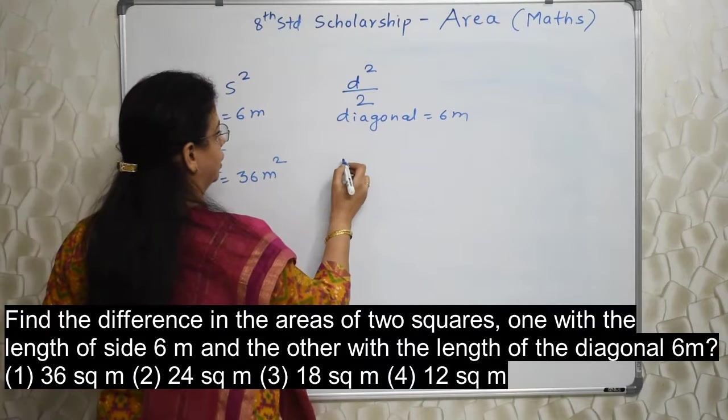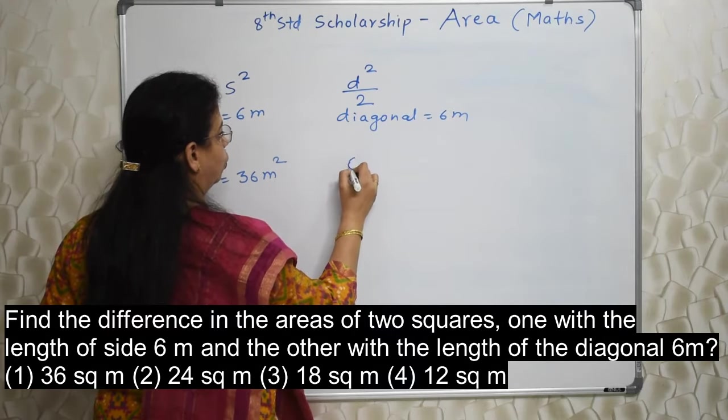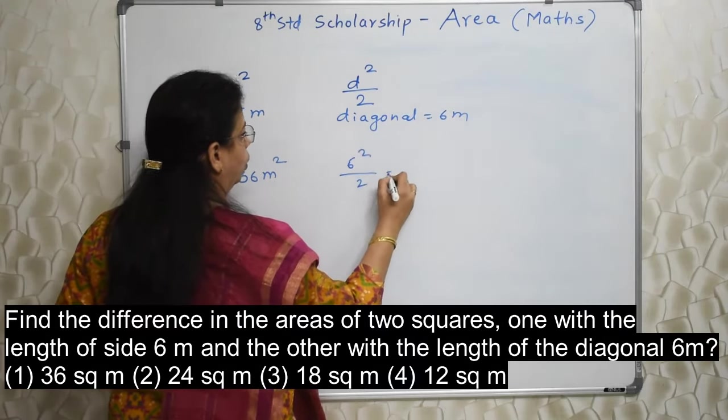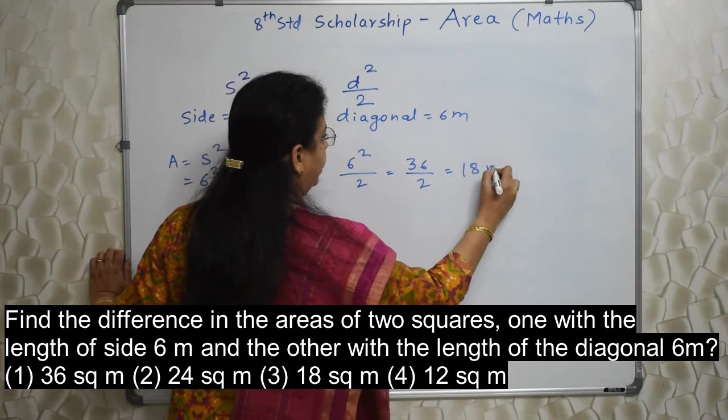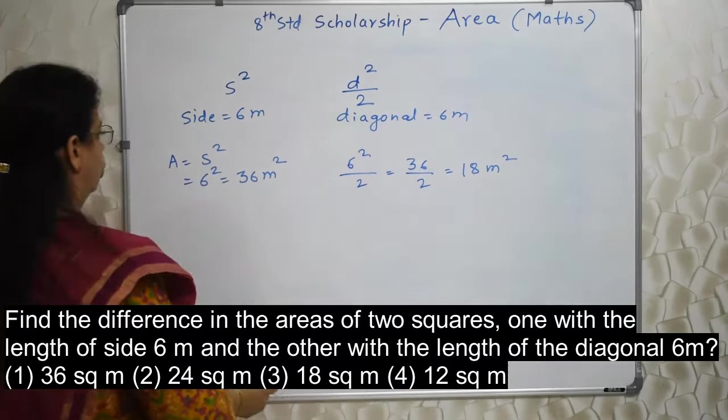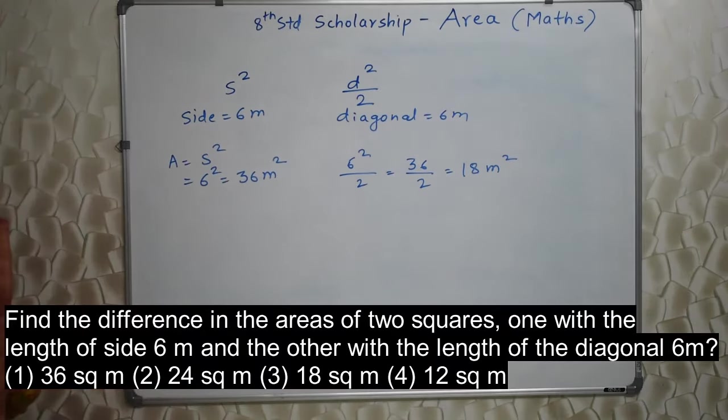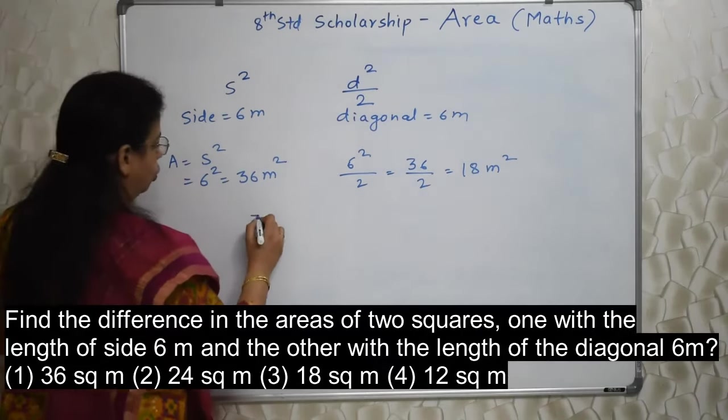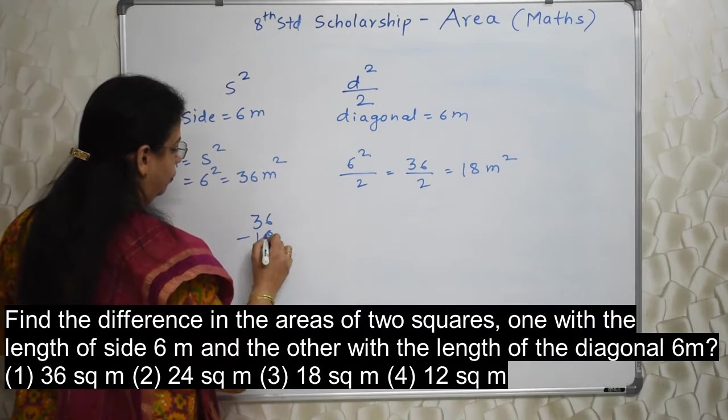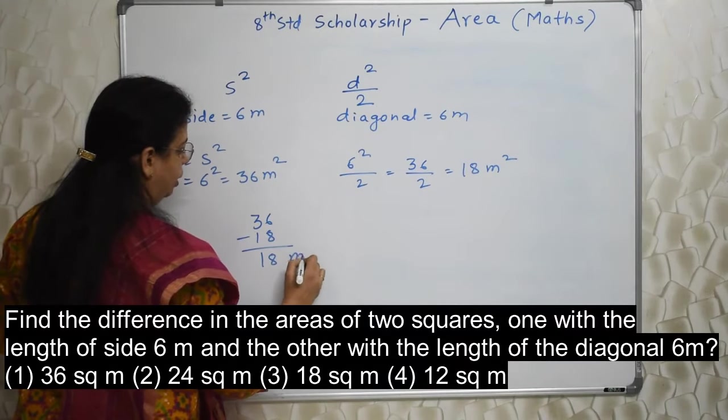Now here, diagonal is 6. So D square, so 6 square upon 2, that is 36 upon 2, that is 18 meter square. So the area is different even though diagonal and sides are same. So we need to find out the difference between the two. That is very simple. Answer is 18 meter square.